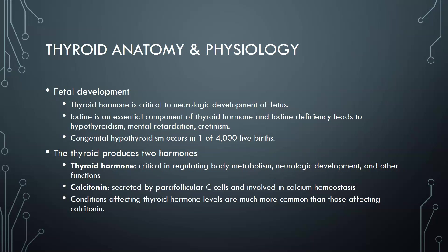The thyroid produces two types of hormones. The thyroid hormones are critical in regulating body metabolism, neurologic development, and other functions. The other hormone the thyroid produces is calcitonin, secreted by the parafollicular C cells, which involves calcium homeostasis. Calcitonin has the opposite effect of parathyroid hormone. Conditions affecting thyroid hormone levels are much more common than those affecting calcitonin.